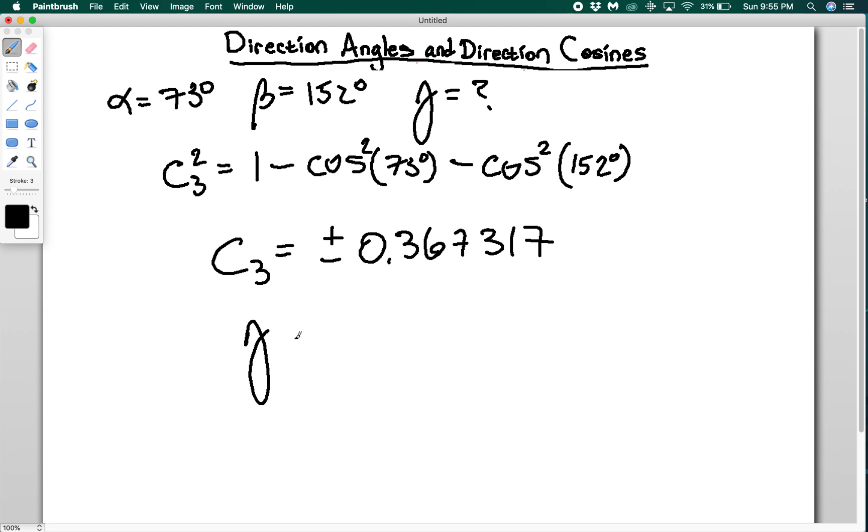So then I get that c3 is going to be equal to positive or negative 0.367317, which means that gamma is going to be equal to either 68.44 degrees or 111.55 degrees. And we can't determine which one it is because we don't have any more information. So it could be either one of these two angles. So that's how you do direction angles and direction cosines and some of the neat relationships with the unit vector.